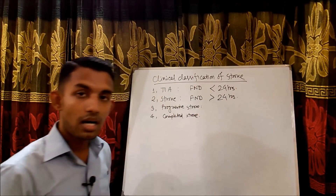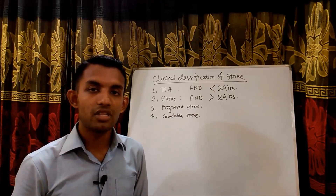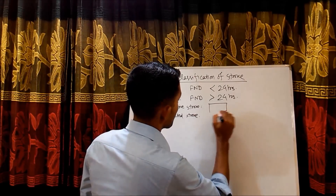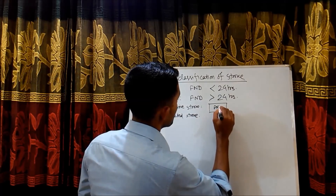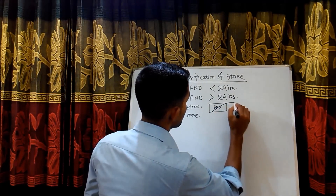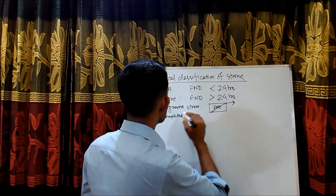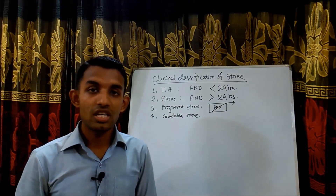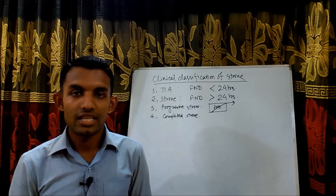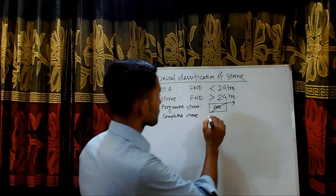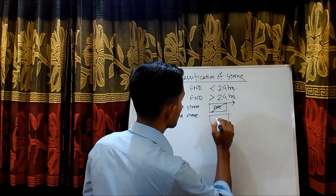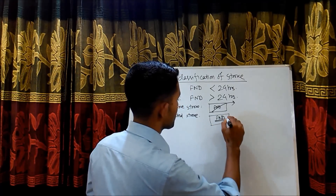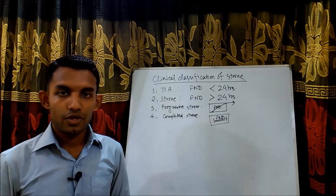In progressive stroke, focal neurological deficit progressively increases after the patient first presents. In completed stroke, the focal neurological deficit persists but does not progress further.